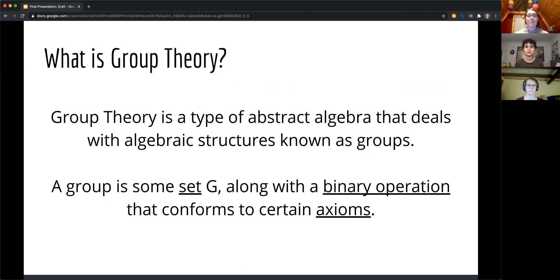Now to understand the math behind tessellations and wallpaper groups we must first understand what is group theory. Group theory is a type of abstract algebra that deals with algebraic structures known as groups. A group is defined as some set G along with a binary operation that conforms to certain axioms. Now groups are a very abstract concept in math and it's okay if you don't understand it immediately from this definition. That's what the next few slides are for.